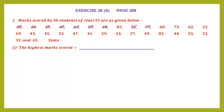Striking off all numbers smaller than 85: 52, 75, 60, 73, 62, 22, 63, 43, 45, 33, 47, 41, 29, 43, 37, 49. There is an 83, but it is still smaller than 85, so strike it off. Then 44, 55, 22, 35 and 45. That means 85 is the highest marks scored. So let's write our answer: 85 is our highest marks scored.